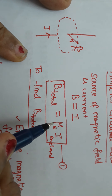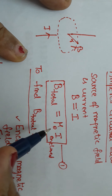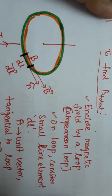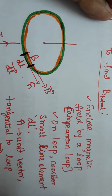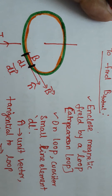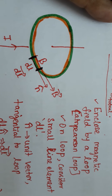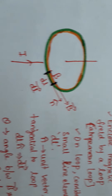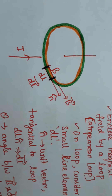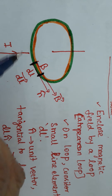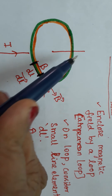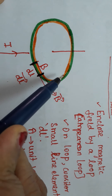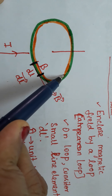B total is equal to μ₀ times I. Now we are going to find out what B total is, and calculate the total magnetic field. For that, consider this diagram: you can see the current-carrying conductor and the magnetic field highlighted in orange color around the conductor.